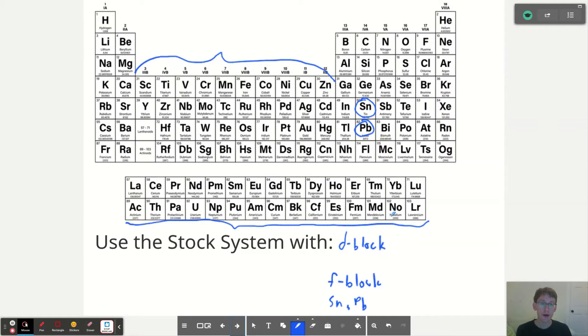In the case of the d-block, there are exceptions. And those exceptions are zinc, cadmium, and silver. But that's because zinc only is ever positive two. Silver is only ever positive one. And cadmium is only ever positive two when it's in a compound.